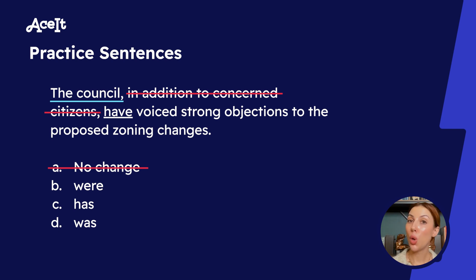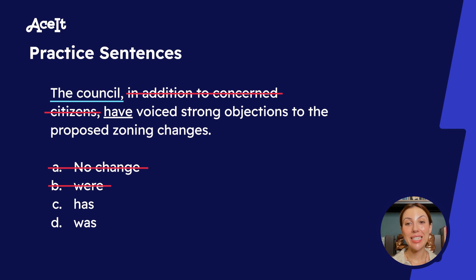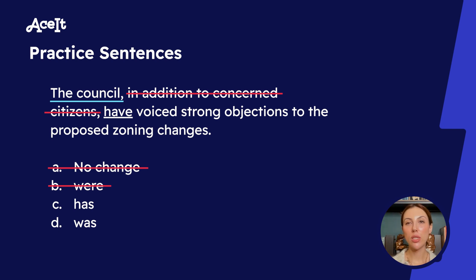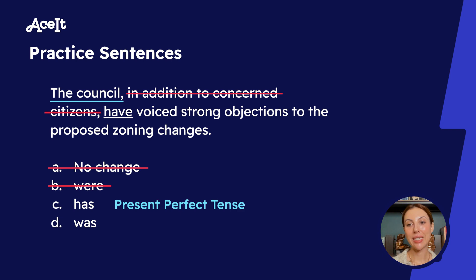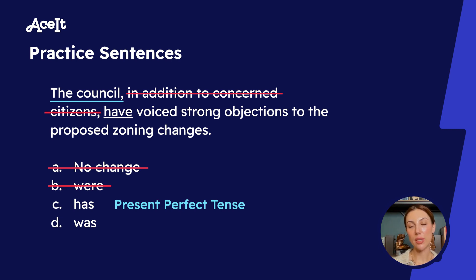'Has' is in fact singular, so C could be our answer. 'Was' is also singular, so now we have two possible answer choices. Let's look at C more closely. 'Has voiced' is in the present perfect tense — we have the present tense of the auxiliary verb 'have,' which is 'has,' combined with the past participle of the main verb, 'voiced.' That sounds grammatically correct, so I would choose C.